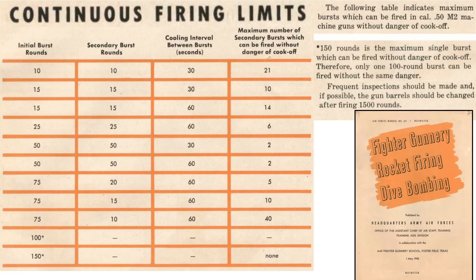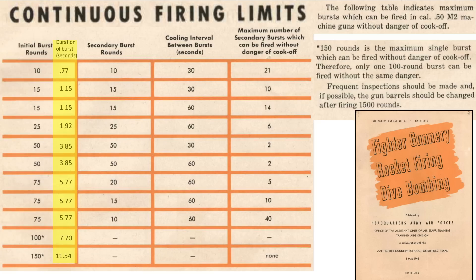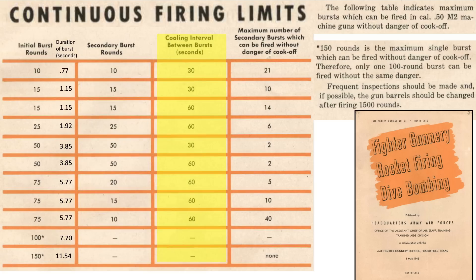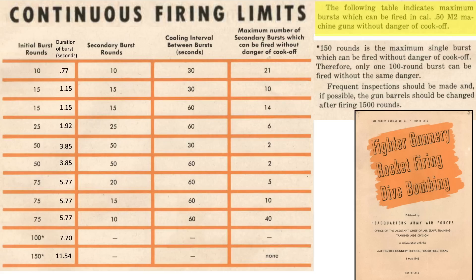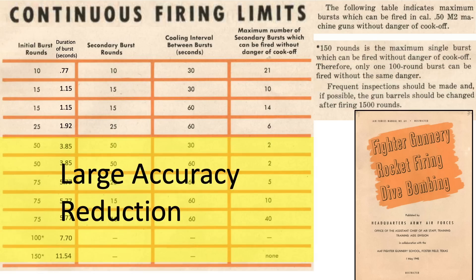This table from a May 1945 Army Air Forces Training Manual No. 64 titled Fighter Gunnery, Rocket Firing, Dive Bombing outlines fighter burst combinations allowed without the danger of cartridge cook-off. The first column is the number of rounds fired during the initial burst; since the rate of fire equates to 13 rounds per second, an adjacent column represents duration in seconds. The second column is rounds per secondary burst, the third is the cooling period between bursts, and the fourth is the number of secondary bursts allowed. This table does not account for increased dispersion from extended fire, only the threat of cartridge cook-off. If firing over 150 rounds continuously, cook-off may occur, and barrels need to be changed out every 1,500 rounds. Since a 50-round burst causes bullet tumble and large strike groupings, those shaded rows would not be recommended.